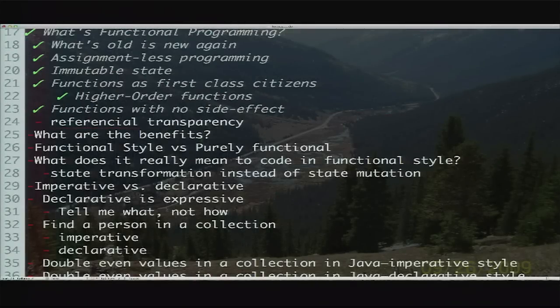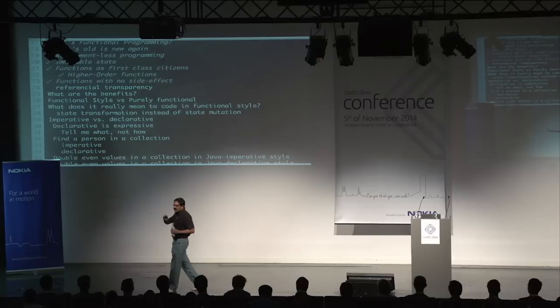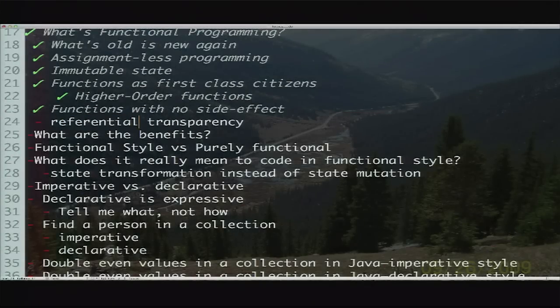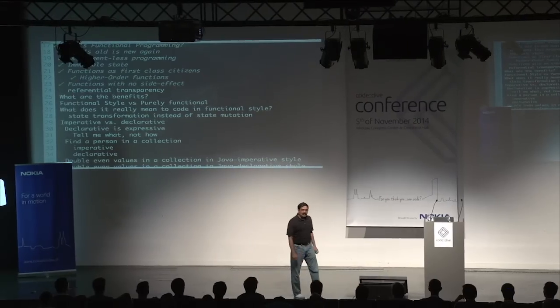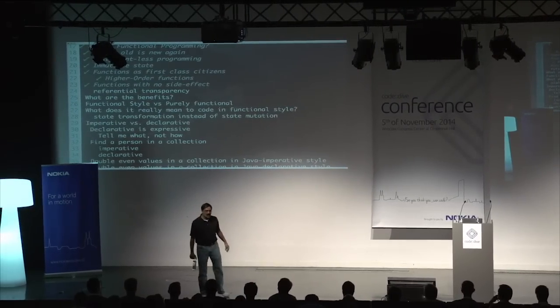Functions are finally being treated with the respect they deserve — that's why it's called functions as first-class citizens. We can pass functions to functions rather than wrapping them into objects. And functions have no side effects. A side effect is where, when you call a function, it is not affected by and doesn't affect anything outside of the function. While the function is running, it doesn't affect anything outside, and is not going to be affected by anything outside.